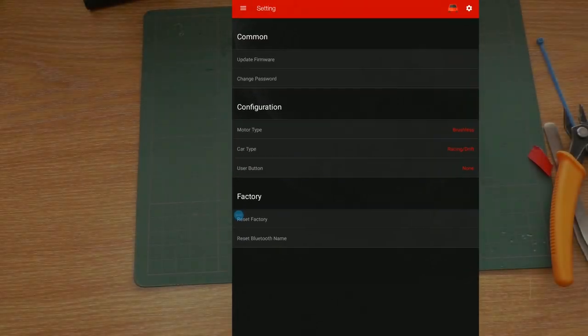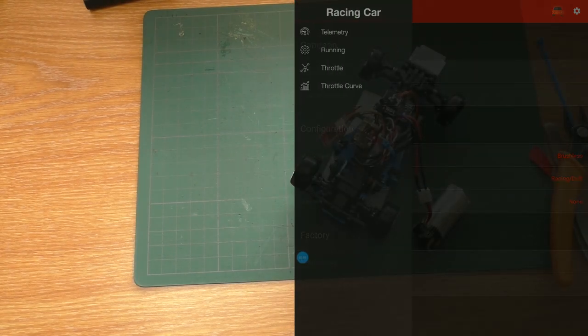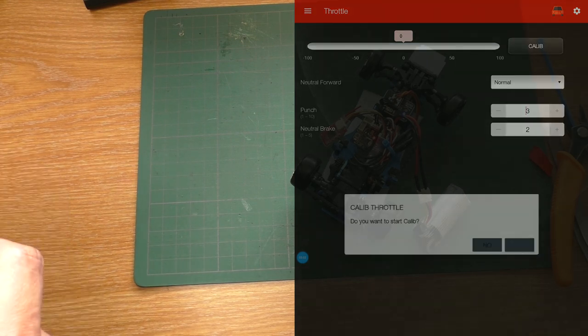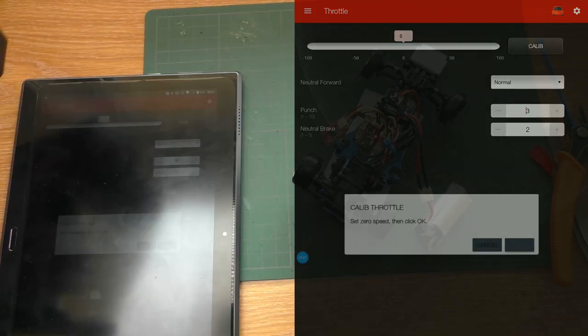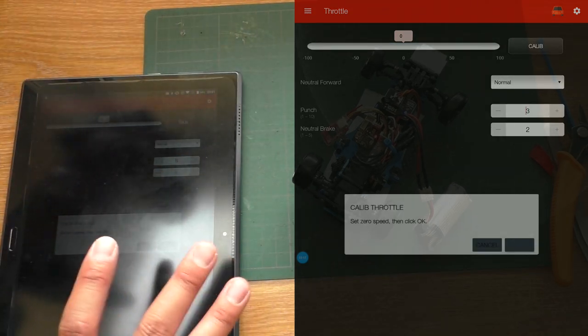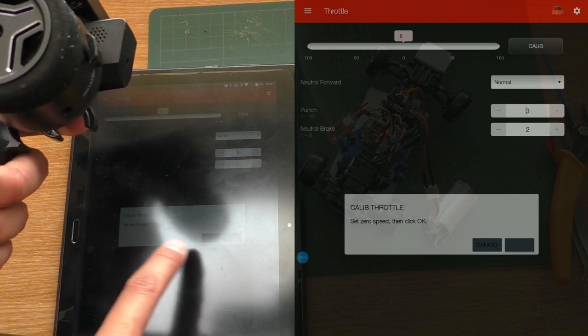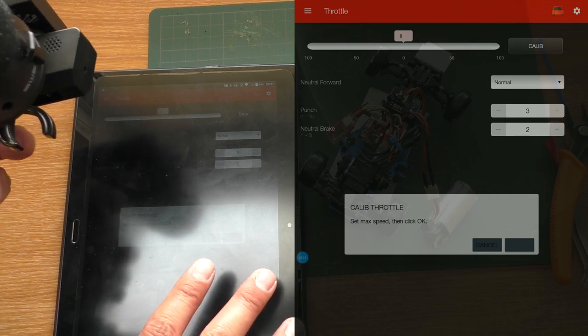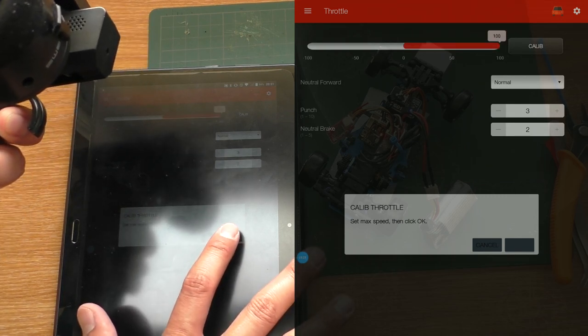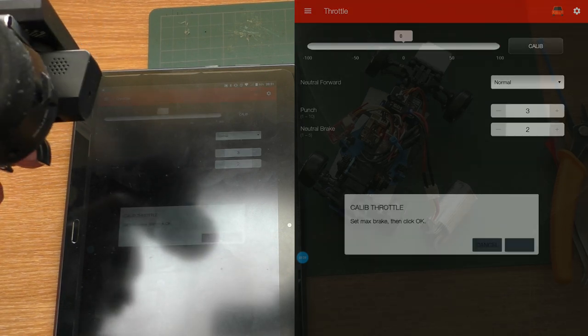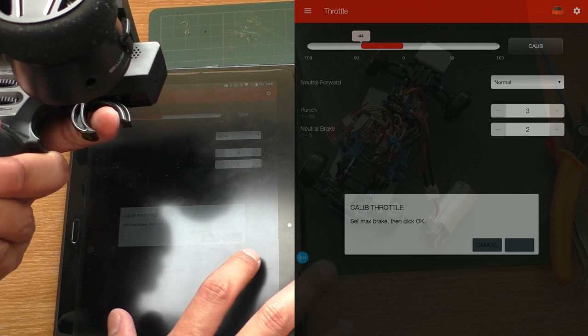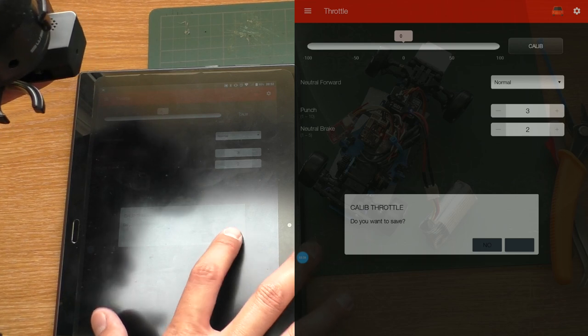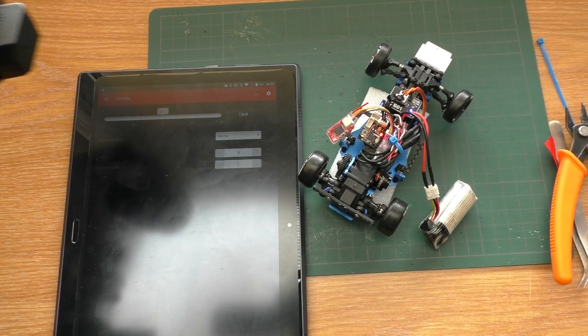Next, we're going to go to the throttle, and then press the calibration. It is going to go into calibration mode. Now, take your radio. We need to set zero speed, then click OK, now click OK. Next is full throttle, click OK. And finally, full reverse, and click OK. Do you want to save? Yes. And it is done.